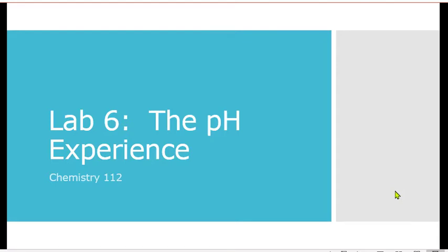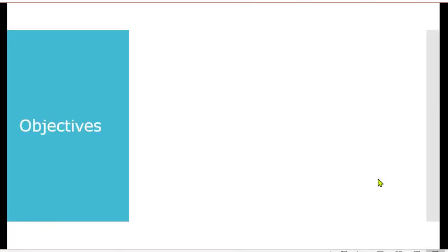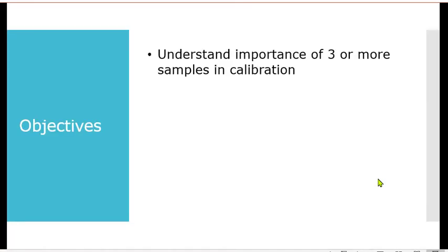This is video one for lab six, the pH experience for chemistry 112. In this video, we're going to focus on understanding the importance of three or more samples in a calibration curve. We're referring to any calibration curve, but we're going to use the pH probe as an example when we calibrate the probe.